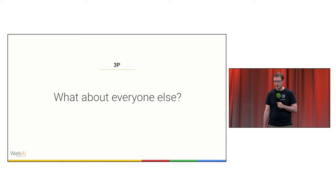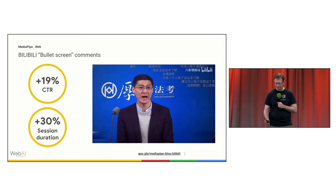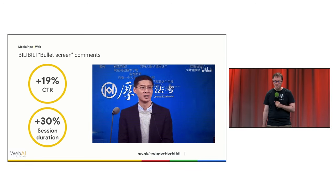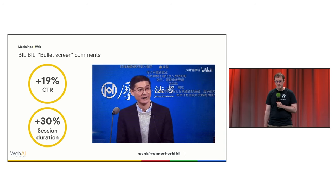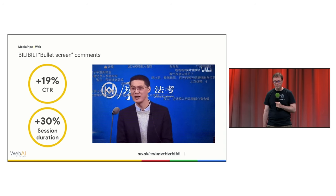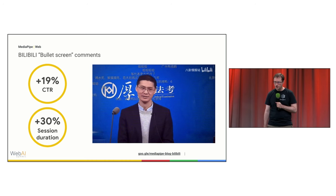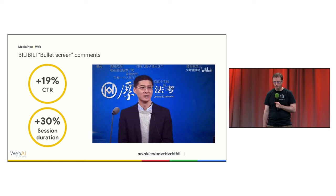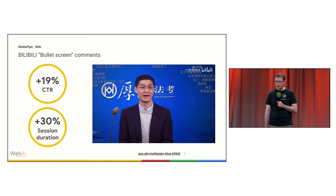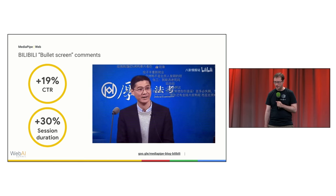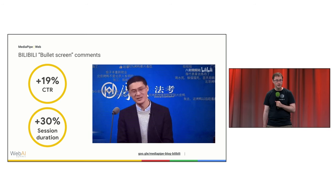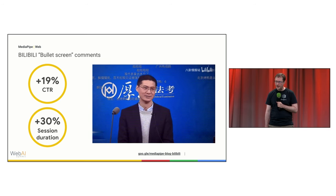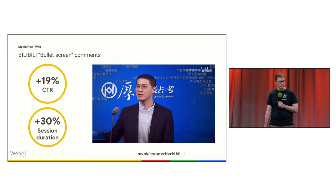Chinese video sharing giant Bilibili used MediaPipe image segmentation and TensorFlow.js in the browser for their signature bullet screen comments feature, so that user comments can pass behind the speaker and leave the foreground unobstructed. Within a month, they saw a 30% increase in session duration and a 19% higher click-through rate for live streaming videos, without any expensive model development or server costs.